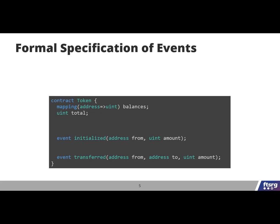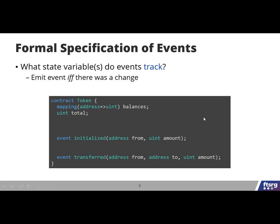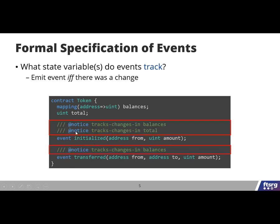We do this with the means of encode annotations written above events and functions. First, events can declare a set of state variables that they track for changes. This basically means that the event should be emitted if and only if there was a change in some tracked variables. Considering the token example, the initialized event tracks both the balances and the total state variable, whereas the transferred event only tracks the balances because the total does not change after initialization.